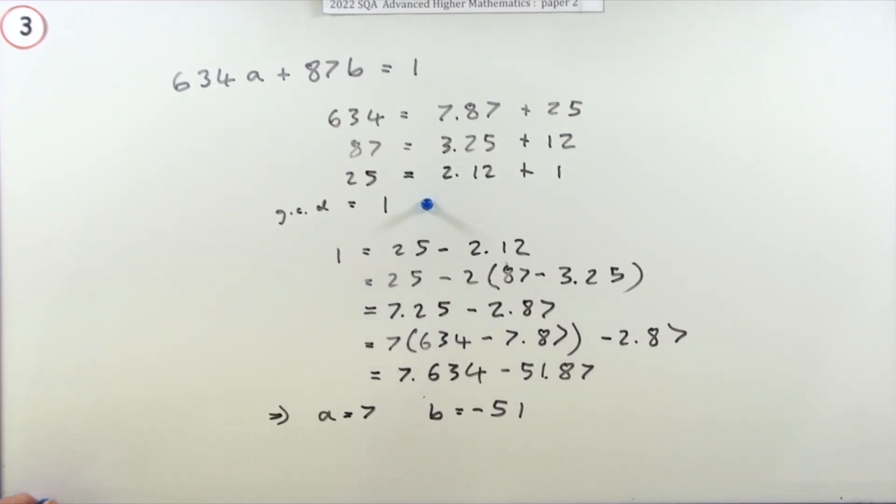I missed out a mark there. You've got one mark for starting the reverse procedure of trying to get something that equals one, and you only get the final mark not when you finish that procedure but when you explicitly state what a and b were, because that was the whole point of the question: state the values of a and b.